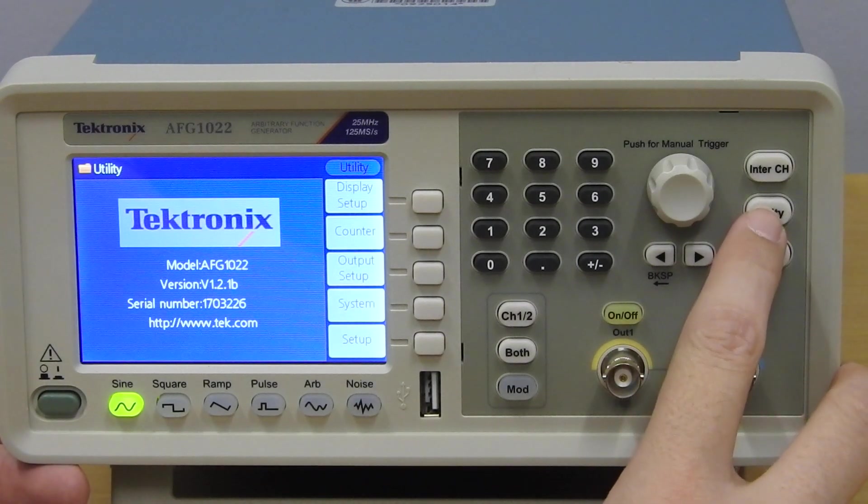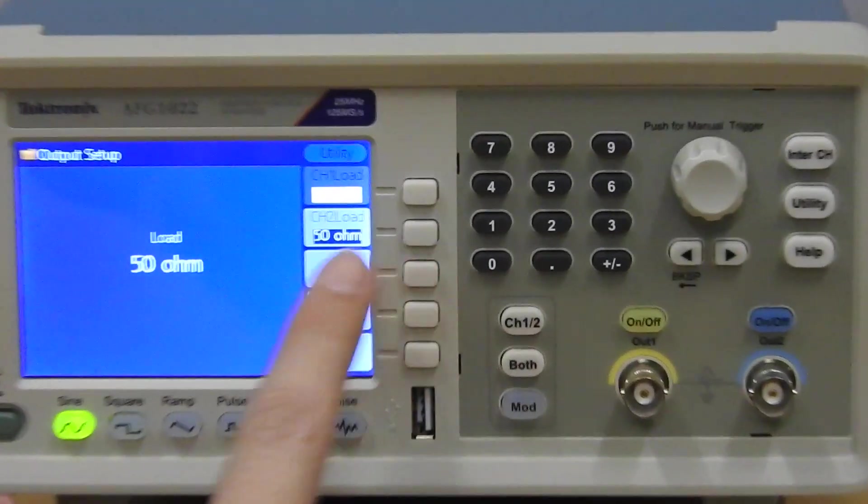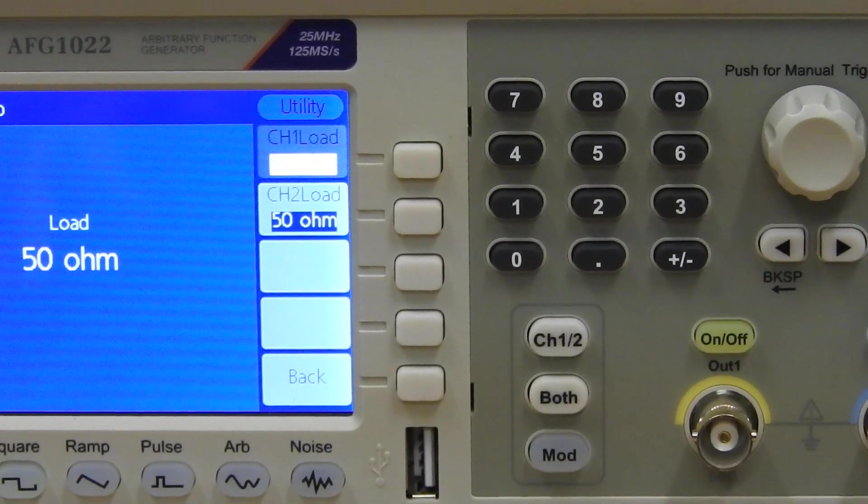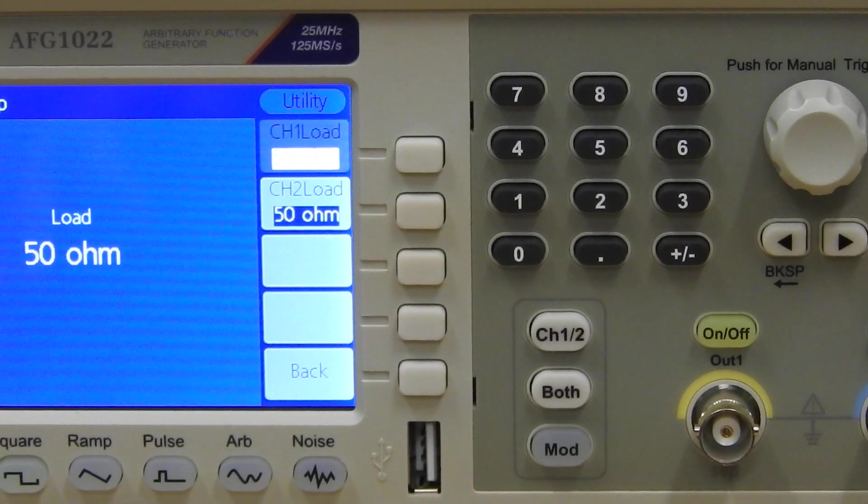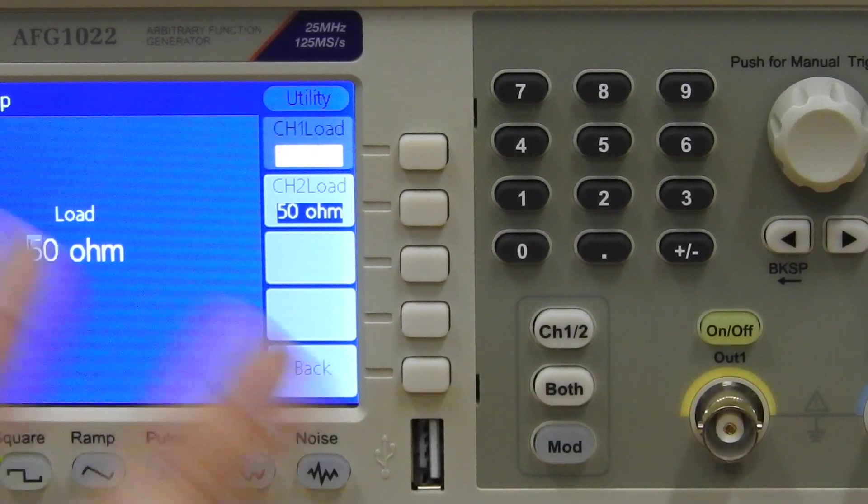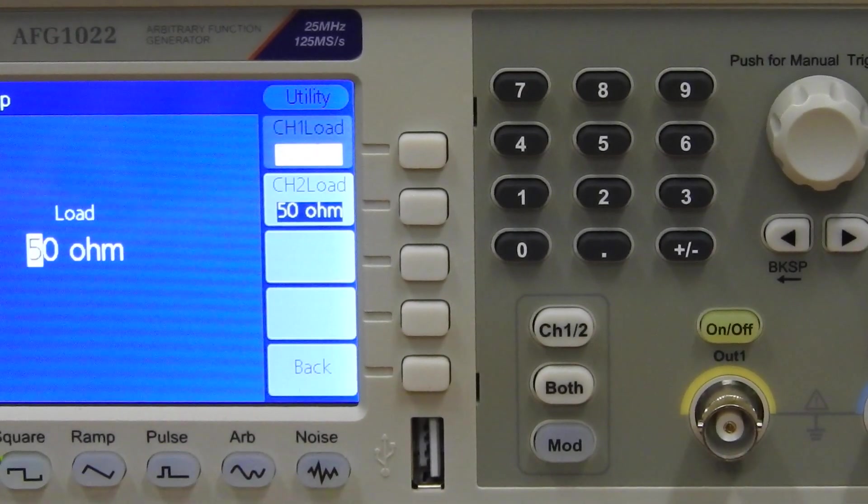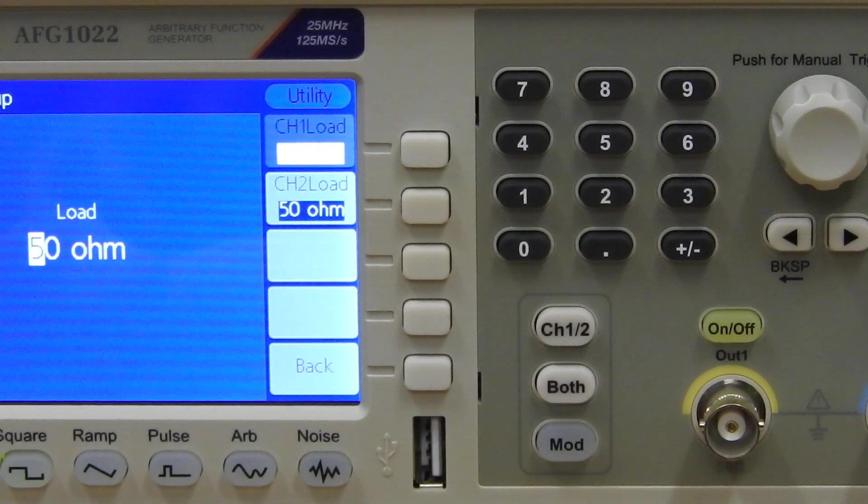When this happens you should go into the utilities and output setup. You will see that channel 1 and channel 2 is set to 50 ohms. You can adjust this if you are a high frequency user because there's 75 ohms and 100 ohm applications you can tune in here.